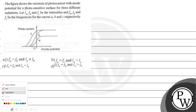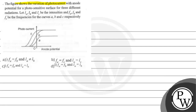Hello bachum. Let us read the question. The figure shows the variation of photocurrent with anode potential for a photosensitive surface for three different radiations. Let Ia, Ib and Ic be the intensities, and frequency of A, frequency of B and frequency of C be the frequencies for the curves A, B and C respectively. A graph is given here and four options.